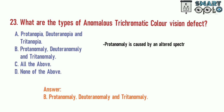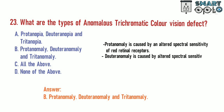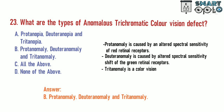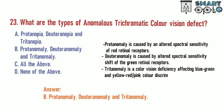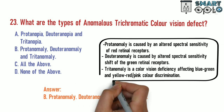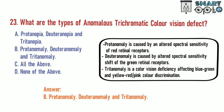Protanomaly is caused by an altered spectral sensitivity of red retinal receptors. Deuteranomaly is caused by altered spectral sensitivity shift of the green retinal receptors. Tritanomaly is a color vision deficiency affecting blue-green and yellow-red-pink color discrimination.